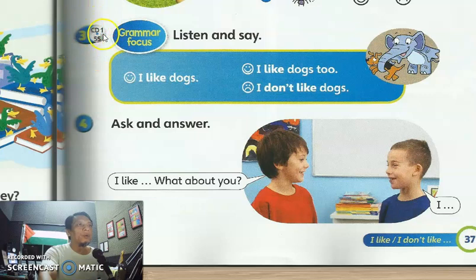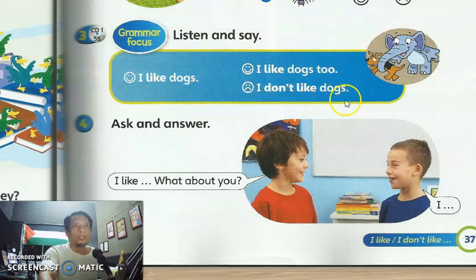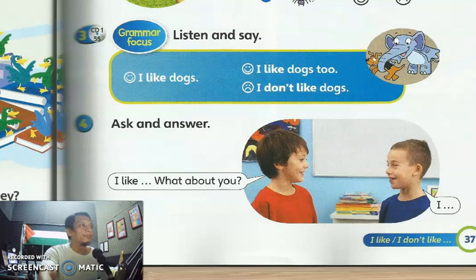So now we want to go to the new topic — new lessons, activity number three, CD number one, track 55. This is about grammar focus: listen and say. 'I like dogs' — 'too' means also. He says 'I like dogs, I like dogs too.' Okay, but this one is 'I don't like' — 'I don't like dogs.' So now we want to hear the audio, CD number one, track 55 — students' book page 37, listen and say.